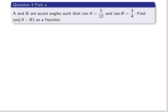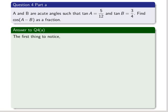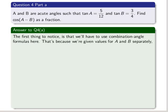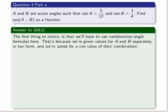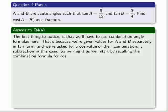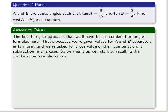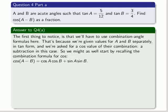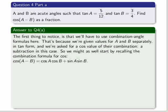Find cosine of A minus B as a fraction. The first thing to notice is that we'll have to use the combination angle formulas here, which you need to know by heart. That's because we're given the values for A and B separately in tan form, and we're asked for a cosine value of their combination, a subtraction in this case. So we might as well start by recalling the combination formula for cosine when the angles are subtracted, which is cosine A minus B equals cosine A times cosine B plus sine A times sine B.